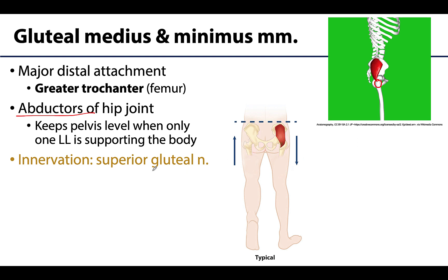When a lower limb is lifted off the ground, the gluteus medius and minimus on the opposite side contract and abduct, allowing for stabilization and leveling of the pelvis, preventing it from dropping on the other side. Both of these muscles are innervated by the superior gluteal nerve.